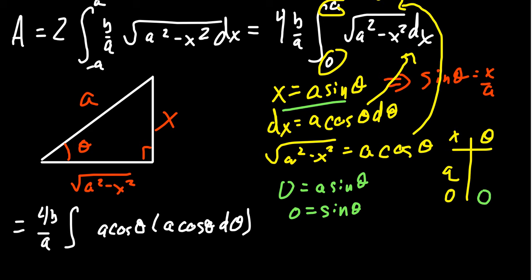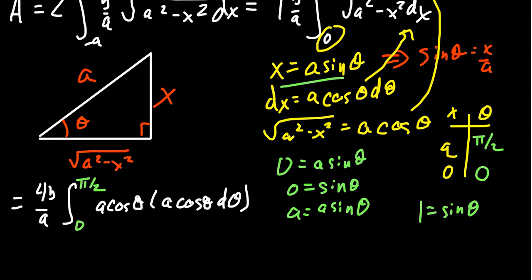On the other hand, when x equals a, we get a equals a sine theta. Divide both sides by a, we get 1 equals sine theta. In that domain, sine will equal 1 exactly at pi halves. So that's our new bounds, from 0 to pi halves. The convenience of switching the bounds is that we don't have to switch back to x ever. We can proceed forward with just theta.